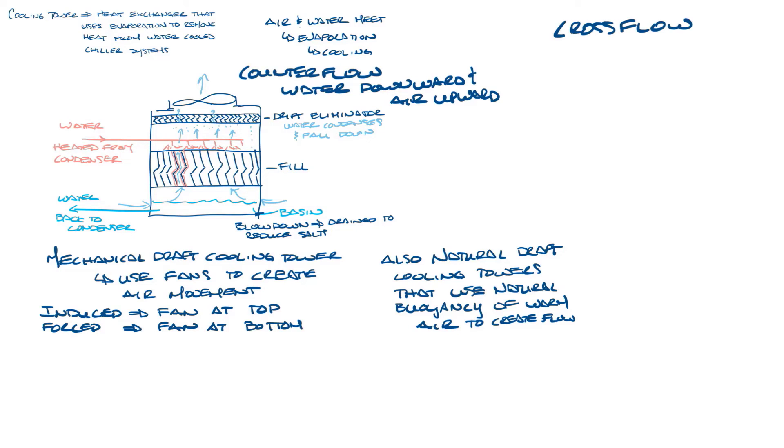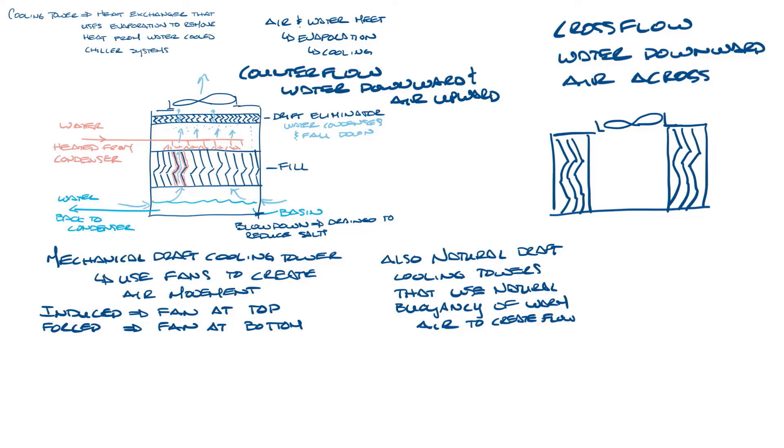In a cross flow cooling tower the water still moves downward but the air flows across it horizontally. So let me draw that here. We'll put our fan on top and then the fill will be on either side, so the water will come in at the top from the condenser, go down the fill just like in the counter flow tower, but the air flow will come in from the side on either side of this cooling tower, go across the fill, and then up out the fan. And then also at the bottom here you'll still have the basin and the water returns back to the condenser from there.